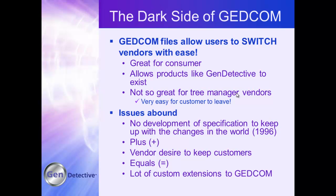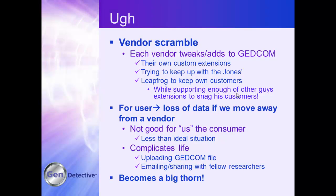So we're losing some of the benefits, because now if I as a consumer switch from product A to product B, there is inevitably data loss. And that makes me, the consumer, irritable. Vendor scrambles happen — they're playing leapfrog: one company adds new product features, the next company adds it, then the third. Then we make extensions to the GEDCOM file, and of course what company A does is not the same as what company B does, which is not the same as company C.